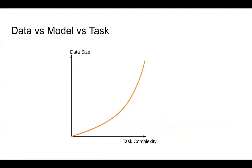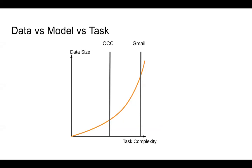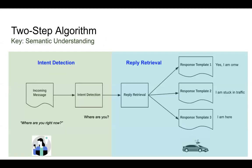When we looked at task complexity to figure out how much data we needed, we realized we're nowhere close in terms of complexity compared to Gmail. In Gmail you can talk about anything — your life, your work, anything. But in Uber's One Click Chat case, people typically talk about pickup — finding each other between driver and rider. The range of topics people discuss is rather limited. As a result, we realized we could start from collecting a small amount of data to test whether it works before collecting a lot. This motivated us to start with a very simple approach.